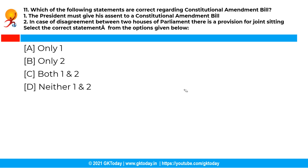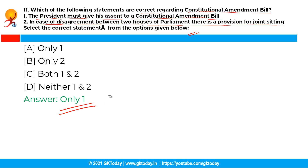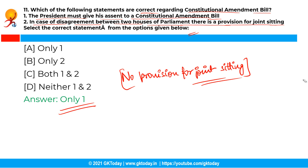The next question is: which of the following statements are correct regarding a constitutional amendment bill? Statement one: the president must give his assent to a constitutional amendment bill. Statement two: in case of disagreement between the two houses of parliament, there is a provision for a joint sitting. The correct answer is option A — only the first statement is correct. A constitutional amendment bill must be passed by each house of parliament separately, and in case of disagreement between the two houses, there is no provision for holding a joint sitting in the constitution.